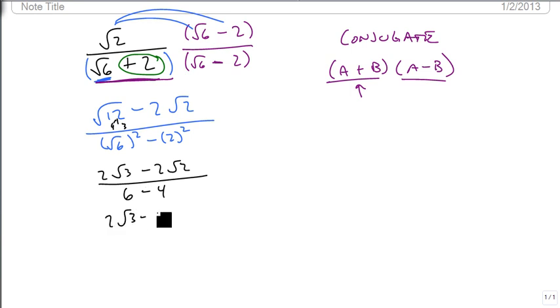This gives us 2√3 - 2√2 all over 2. And since the 2 goes into both evenly, we divide it all out, and we're left with √3 - √2. And here is our rationalized answer. Now, I want to look at another one.